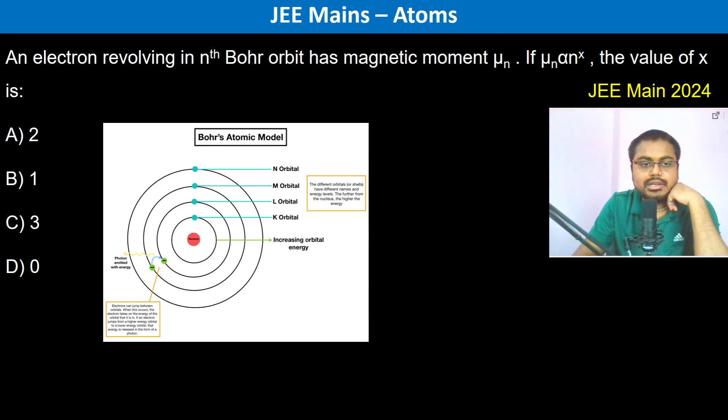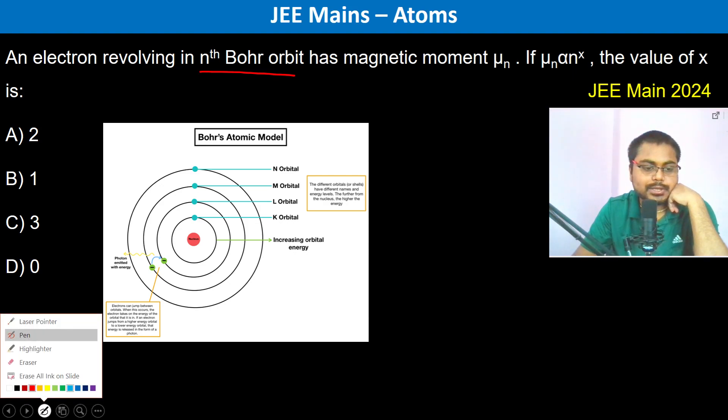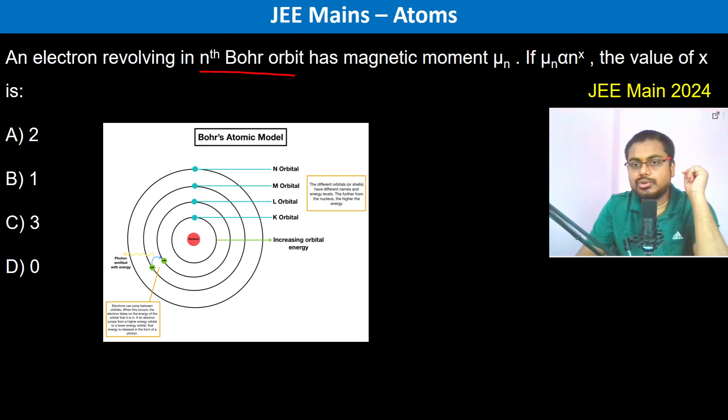An electron revolving in the nth Bohr orbit has a magnetic moment μn. If μn is proportional to n to the power x, the value of x is. So we have mass of electron into v squared